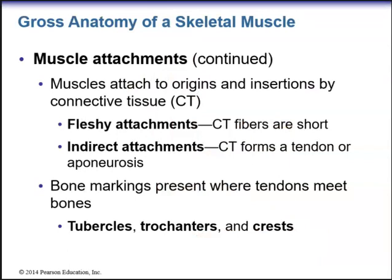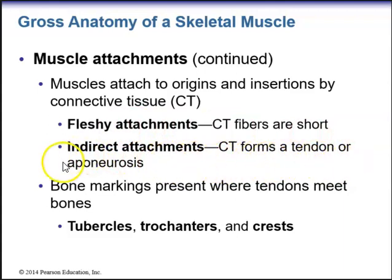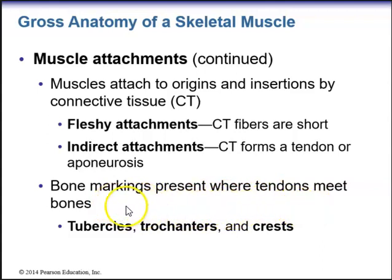Muscles attach to origins and insertions by connective tissue. With fleshy attachments, the connective tissue fibers are short. Indirect attachments have connective tissue forming a tendon or aponeurosis. Bone markings are present where tendons meet bones — we talked about different bony markings that serve as attachment sites, including tubercles, trochanters, and crests.